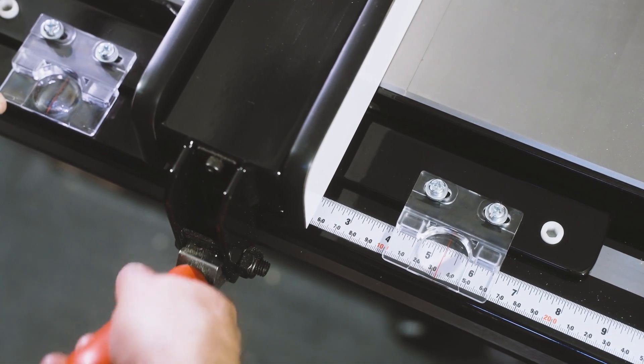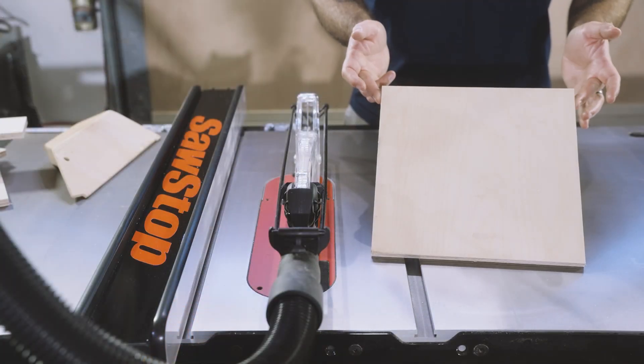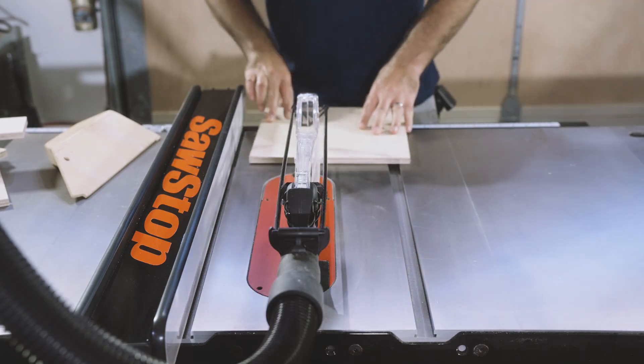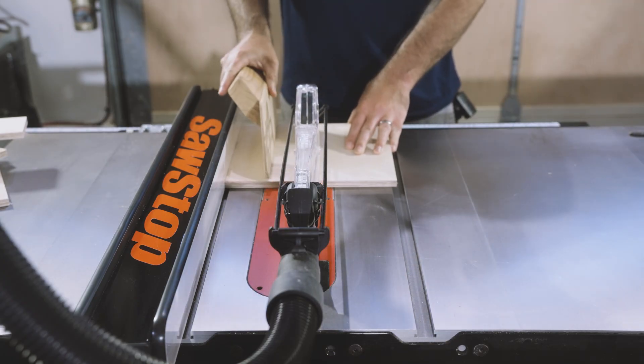Next we'll set our fence to 5 and a quarter inches. And with the remainder of our plywood, we'll cut 4 squares at 5 and a quarter by 5 and a quarter inches.